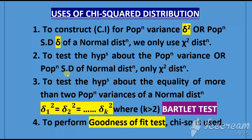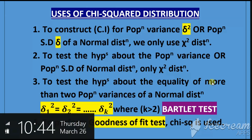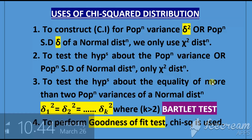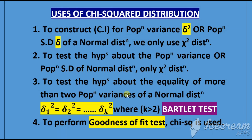The third use: to test the hypothesis about the equality of more than two population variances of a normal distribution, we use chi-square distribution.